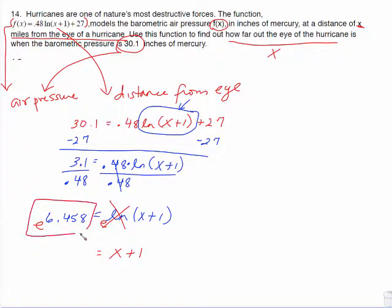This is just calculator. You need to do e to the 6.458, which is 637.996. Get x alone by subtracting 1 from both sides. So x is 636.996 miles.